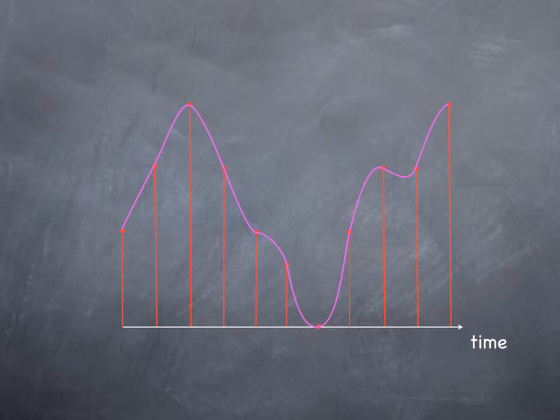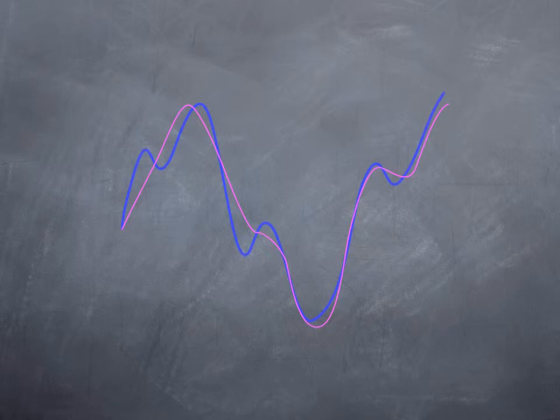So, how does the reconstructed wave compare with our original? Well, considering we encoded it as a string of just 33 noughts and ones, not bad. The main features of the waves are there. It's just the finer details that are missing. By taking more samples and using a greater number of sample heights, a much greater level of accuracy could be achieved.